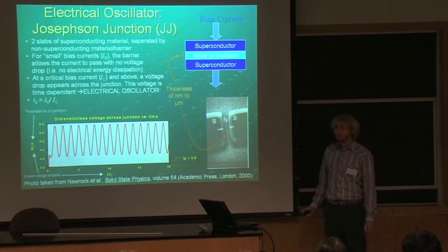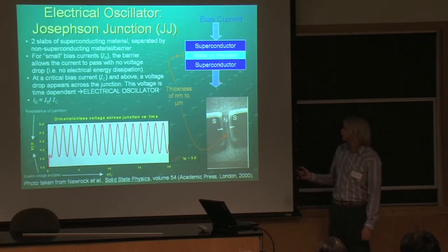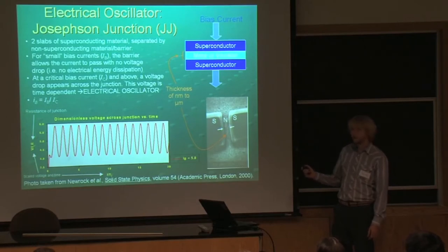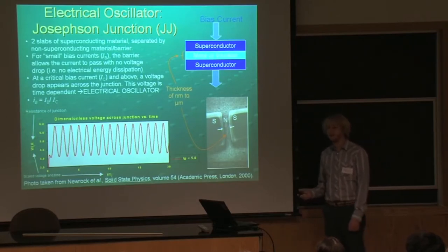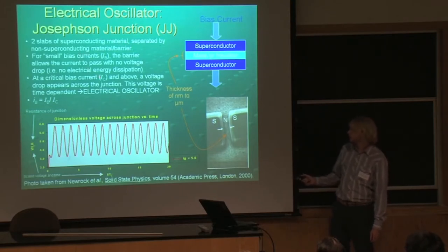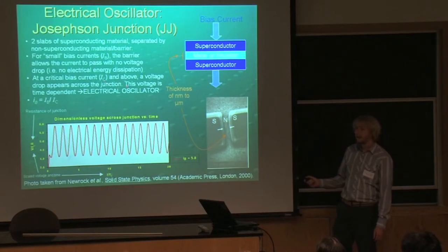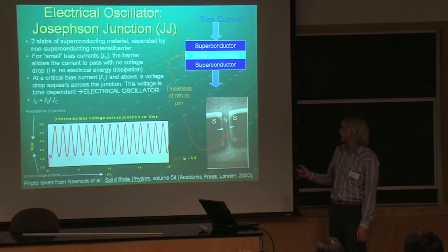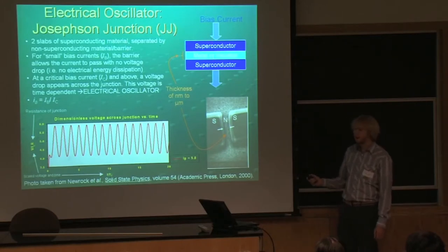One thing you can do with these is you can run a current across the Josephson junction, and if that current — the bias current, as it's called — is small, then this will act exactly just like a normal superconductor, and there will be no energy dissipation across it; there won't be any voltage drop. However, Josephson junctions have what's called a critical current, and if that bias current is higher than the critical current, it will change, and a voltage will drop across it, and the voltage will be time-dependent and will oscillate.